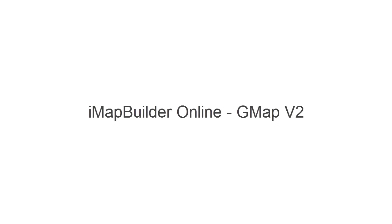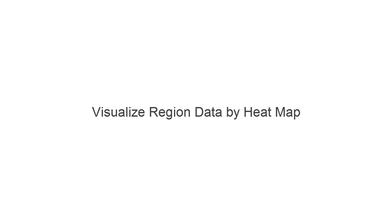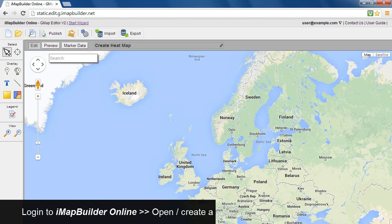IMAP Builder Online, GMAP B2. Visualize Region Data by Heatmap. Log into IMAP Builder Online.